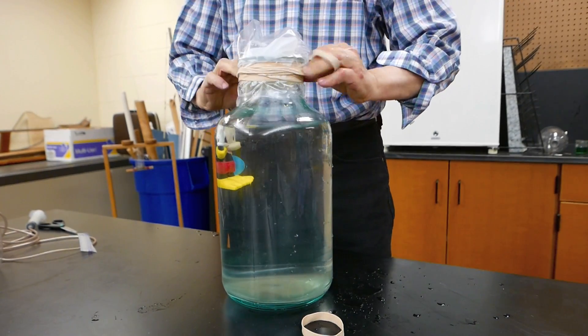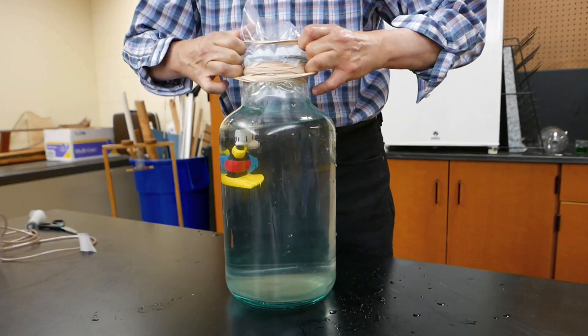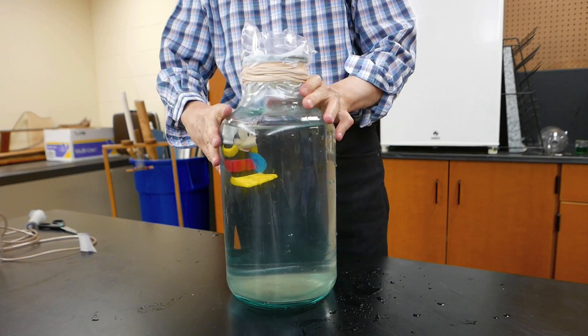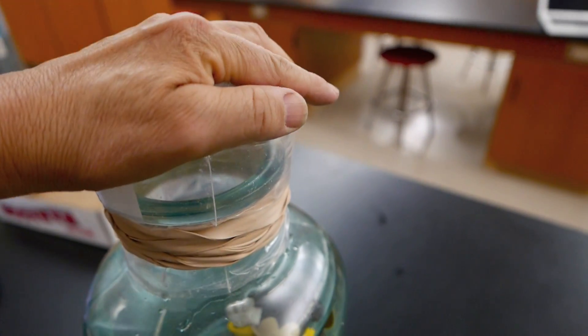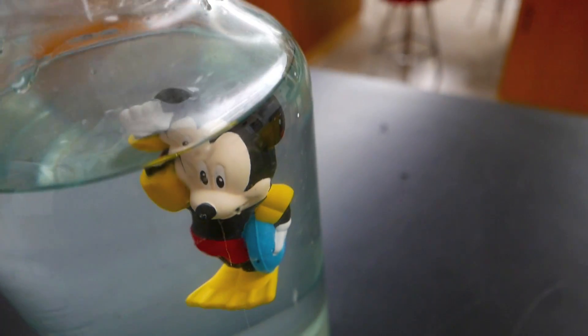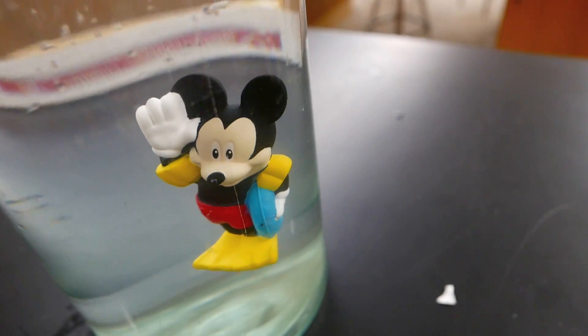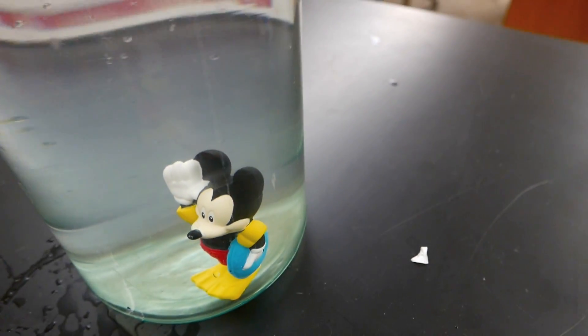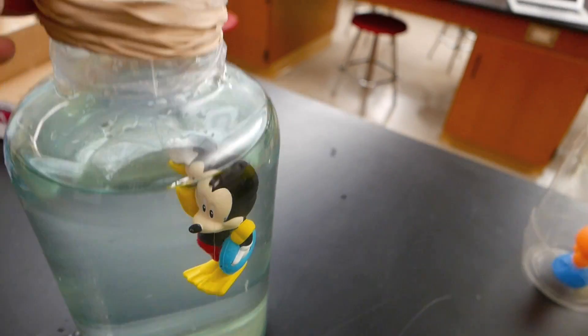Now once again we can try that same idea with this glass bottle. I have a diver inside. I have a few rubber bands on the glass bottle, the bag, and then several rubber bands over top. Push down on the bag and Mickey dives. Release it and it comes back up again.